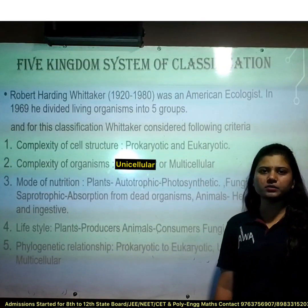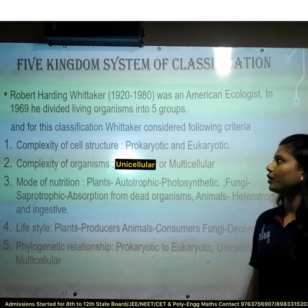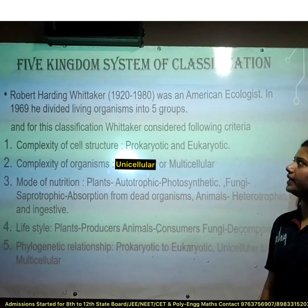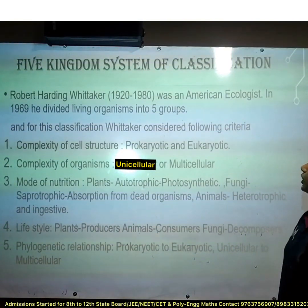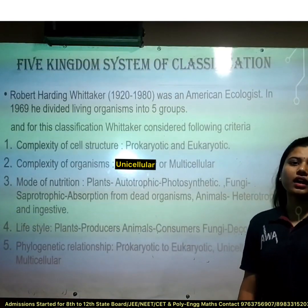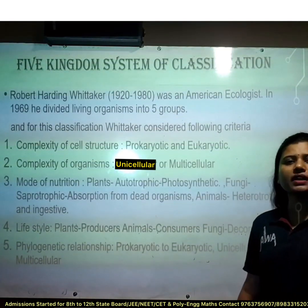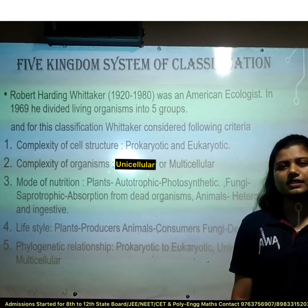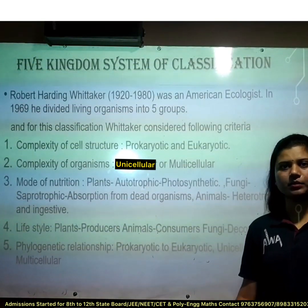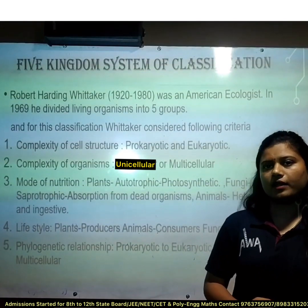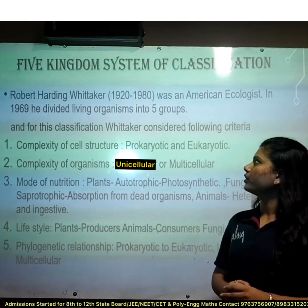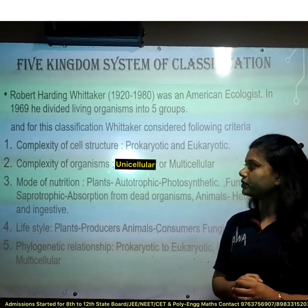Now let's see the five kingdom system of classification. Robert Harding Whittaker, who lived from 1920 to 1980, was an American ecologist. An ecologist is a scientist who studies how plants and animals interact with the environment. In the year 1969, he divided living organisms into five groups.